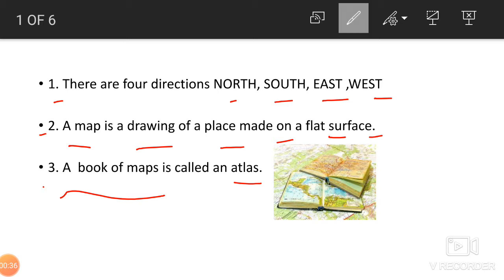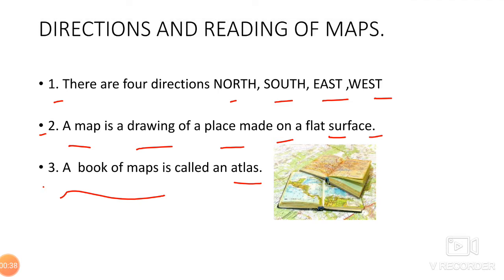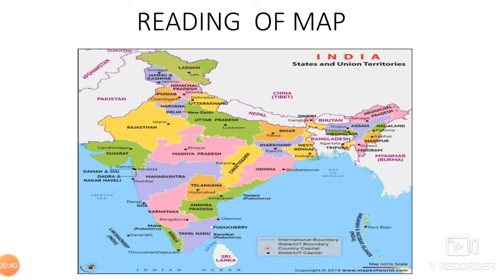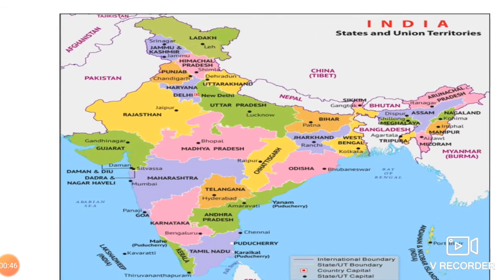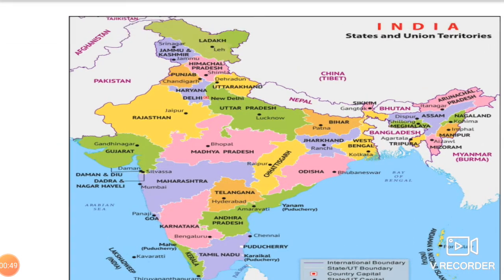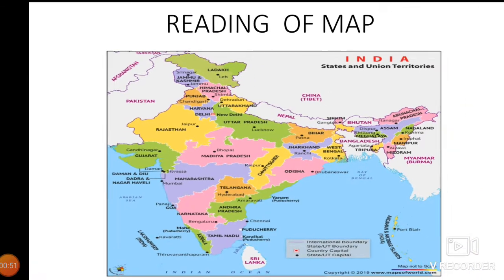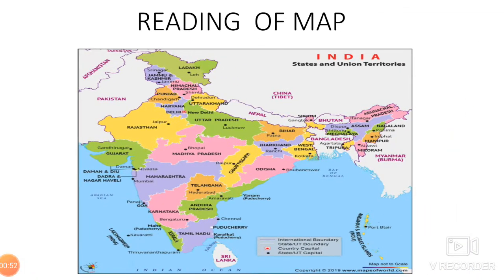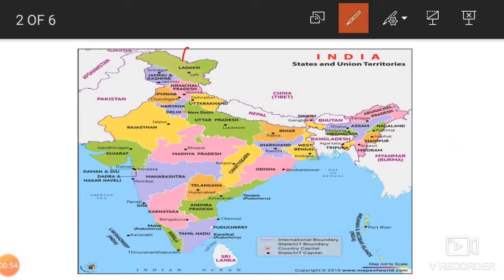You will be studying the Atlas in higher classes when you learn social studies. Now, reading of a map — when reading a map, the four directions are important: this is north, this is south, this is east, and this is west.